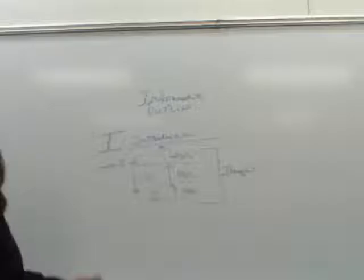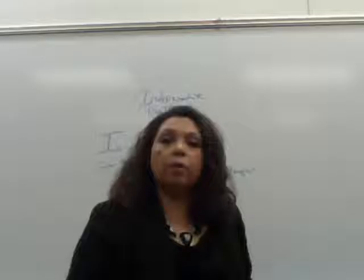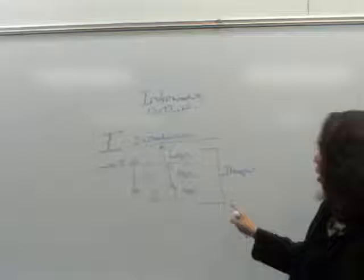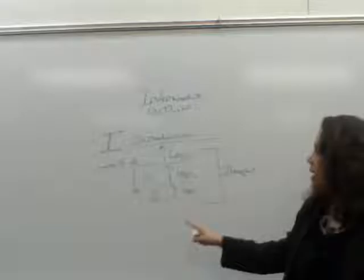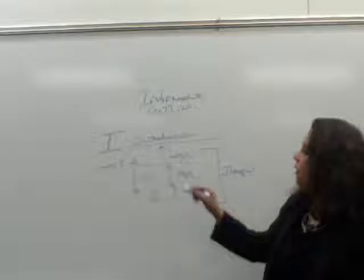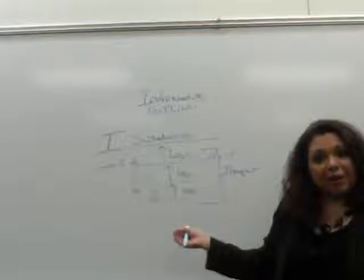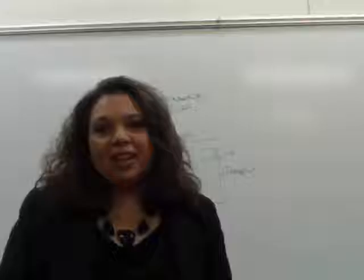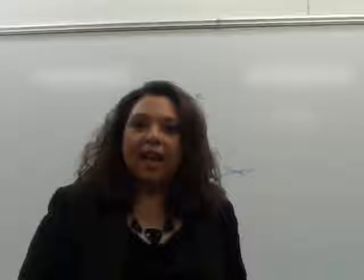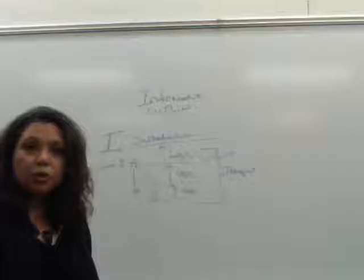Every single Roman numeral — whether one, two, or three — has this same structure. They all have A, B, and sub-points one and two. You can think of A as a sub-point, and one and two are sub-points to the sub-points. I don't know if it sounds complicated, but when I show you the example you will understand it much more. Each of the Roman numerals has this structure.